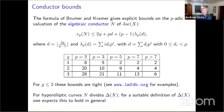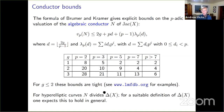A side note on conductor bounds: only finitely many primes can divide the conductor — those of bad reduction for the Jacobian. Explicit bounds on the power of each prime in the conductor were given by Brumer and Kramer. Better in practice is to take an integral model for the curve, as minimal as possible, and use its discriminant as the upper bound. This always works for hyperelliptic curves.